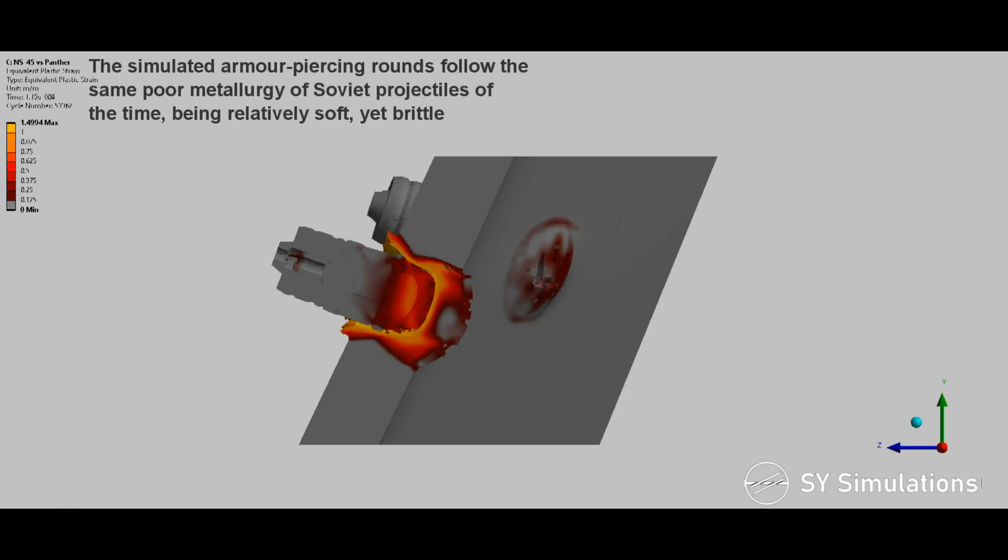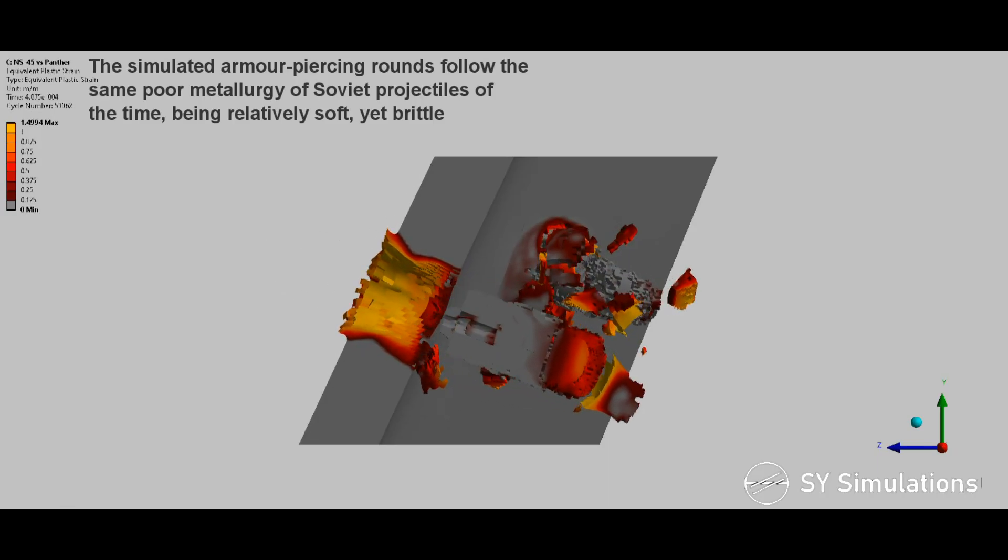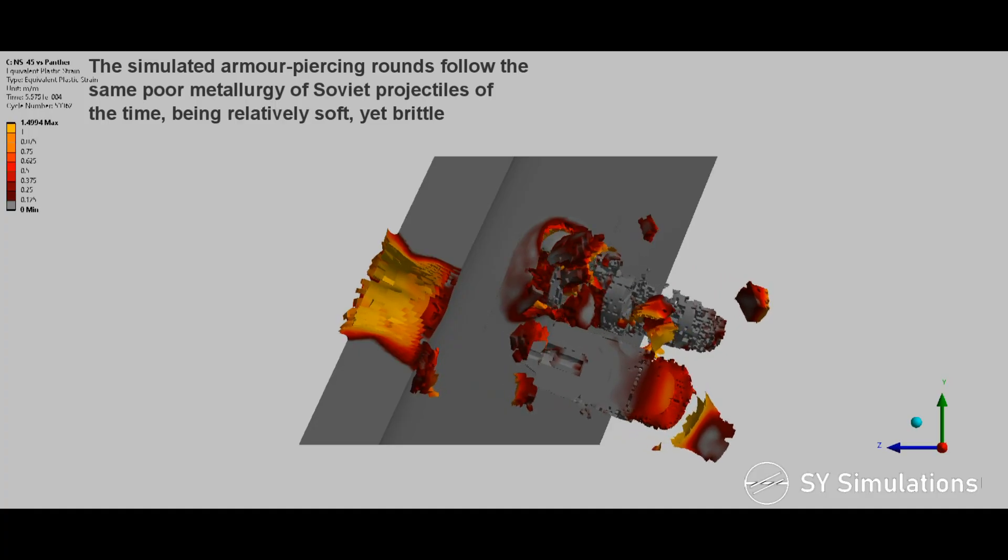The simulated armor-piercing rounds followed the same poor metallurgy of Soviet projectiles of the time, being relatively soft yet brittle.